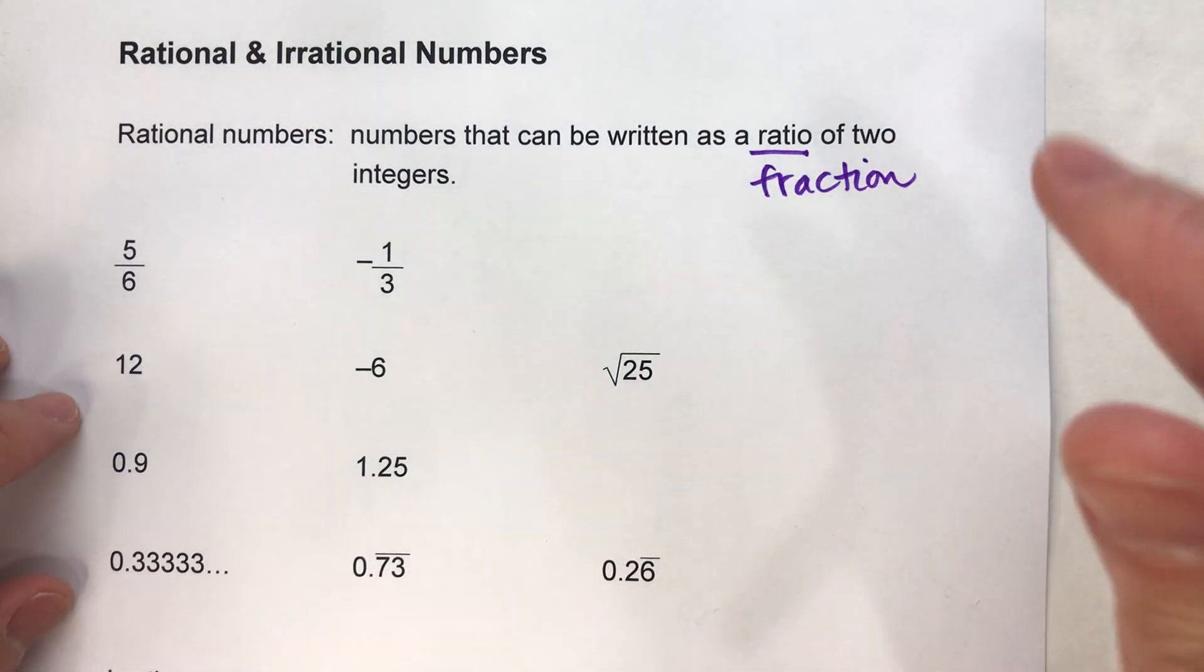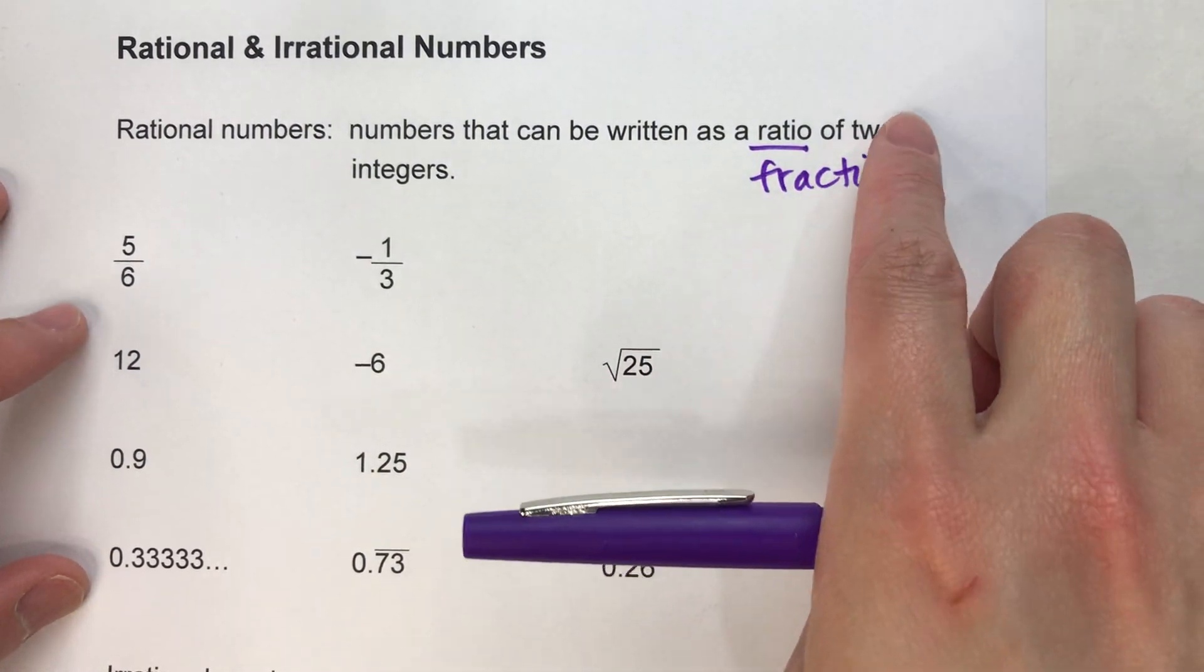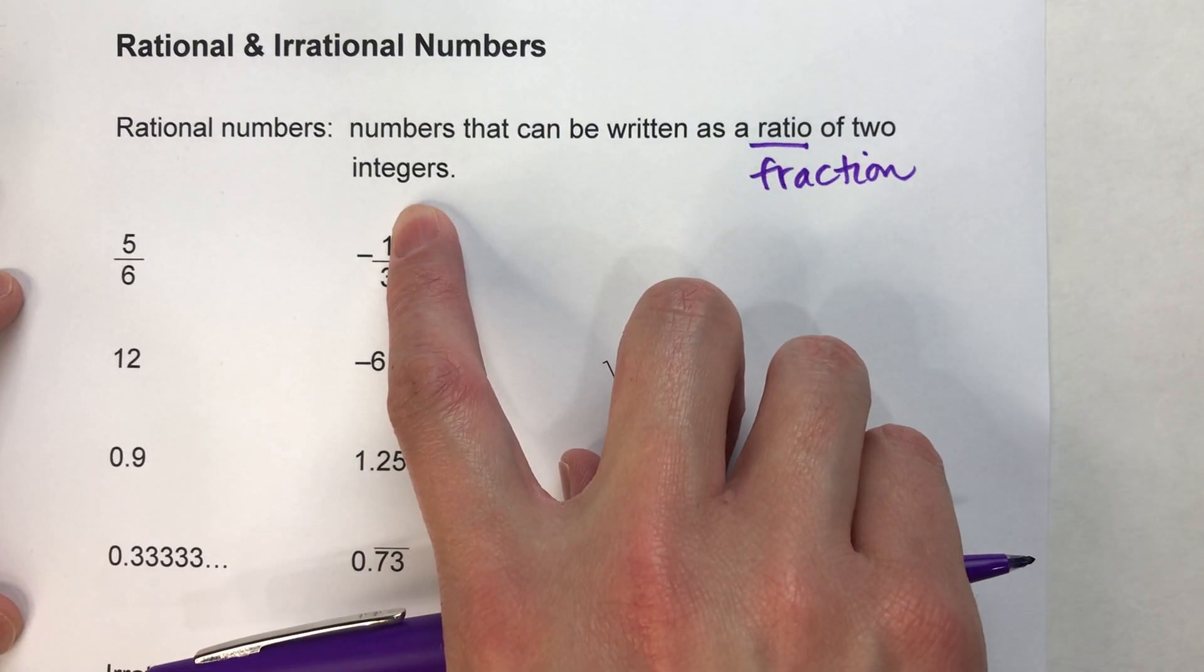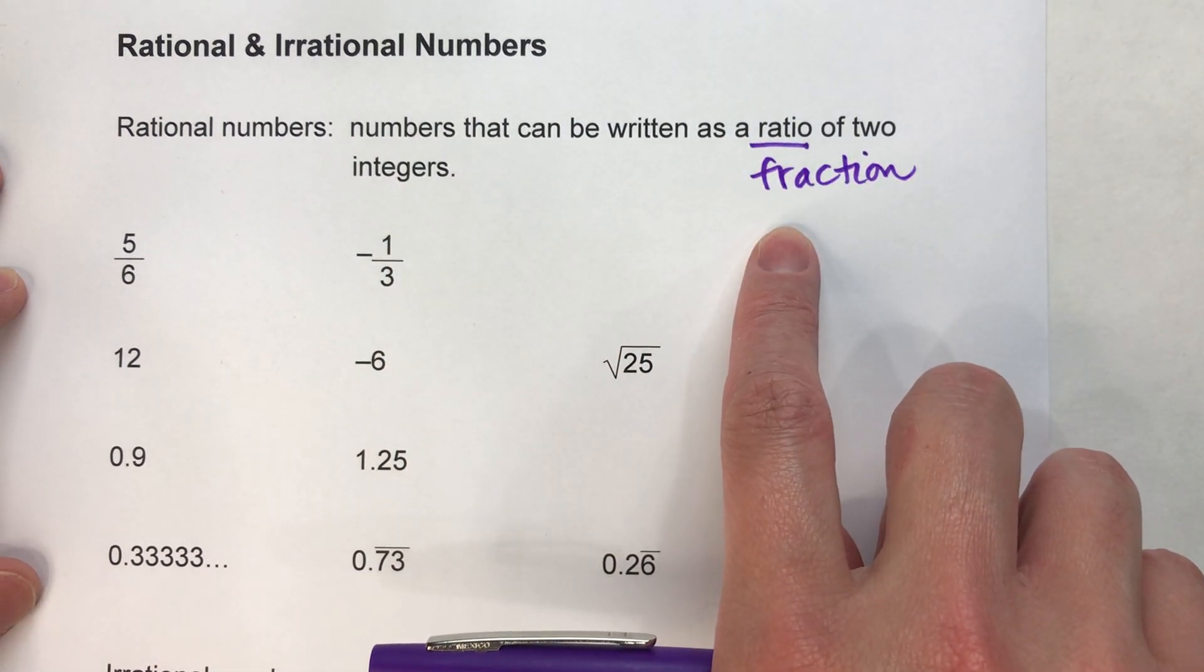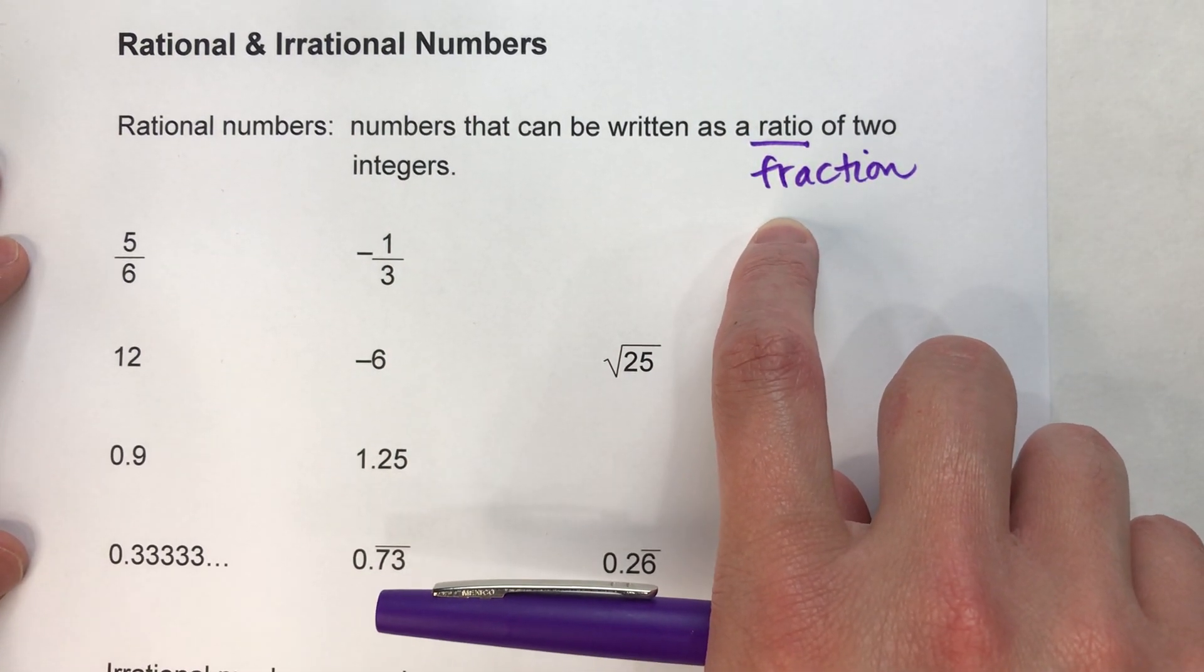it can be written as a fraction. A ratio is just a fraction, and two integers are basically whole numbers, whether they're positive or negative. So if it can be written as a fraction, then it's a rational number.